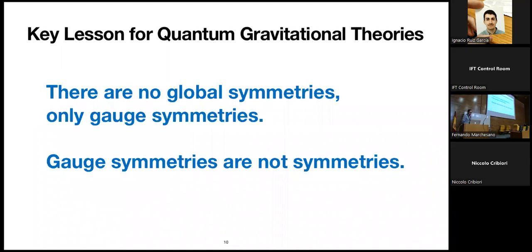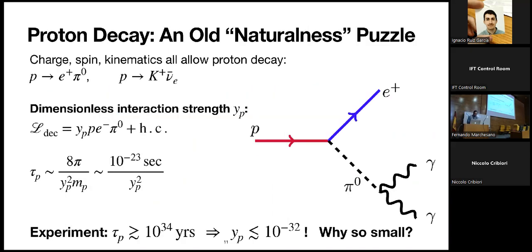Our key belief about quantum gravity — for which there is increasingly large amounts of evidence — is that quantum gravity theories have no global symmetries, only gauge symmetries. We should remember that gauge symmetries are not really symmetries in the sense that they don't relate different physical states.